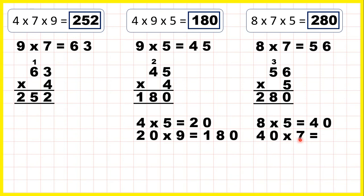4 times 7 is 28, so 40 times 7 is 280. You just multiply 4 by 7, then if there's a 0 in a multiplication question, there will be a 0 in the answer.